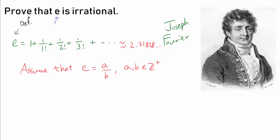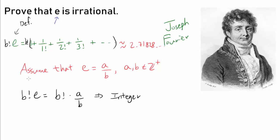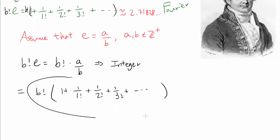So we can safely assume that A and B are positive integers. Now let's realize that B factorial times E — because E is A over B — means B factorial times A over B is obviously an integer. So we know B factorial times E is an integer. And another way of writing B factorial times E is: B factorial times the series 1 plus 1 over 1 factorial, plus 1 over 2 factorial, plus 1 over 3 factorial, and so on. So this entire thing has to be an integer.